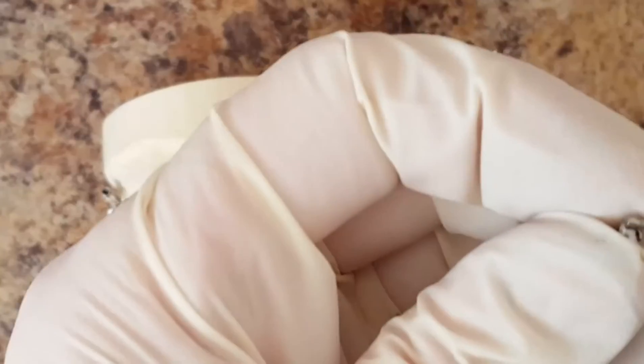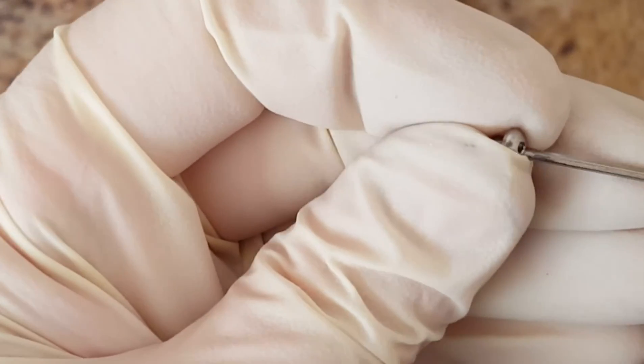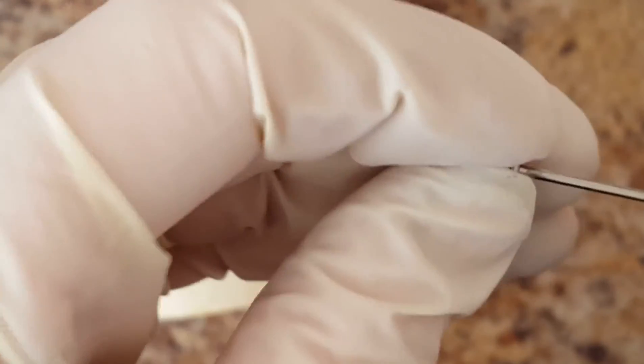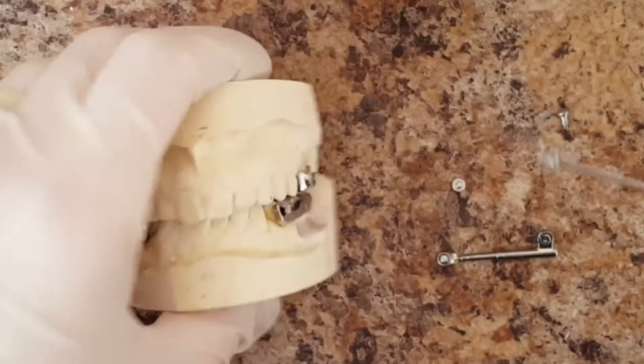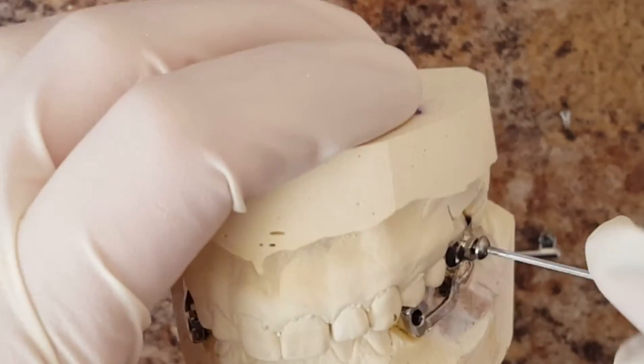In this next part of the video, I'm going to demonstrate how you would take an Allen wrench and hook up your hex head screw and place it in the child's mouth as you assemble the Herbst.